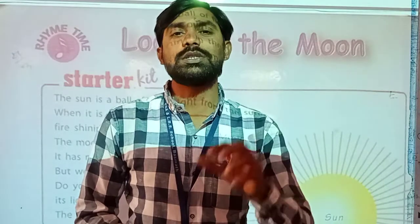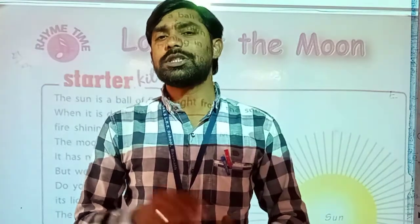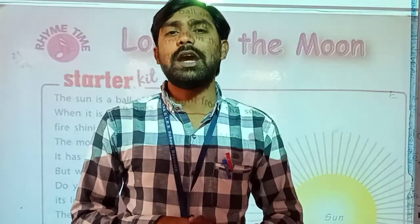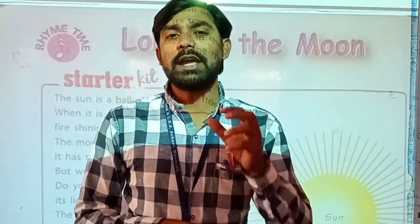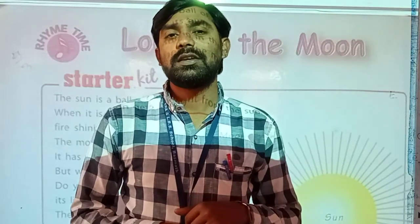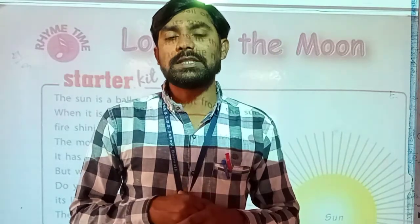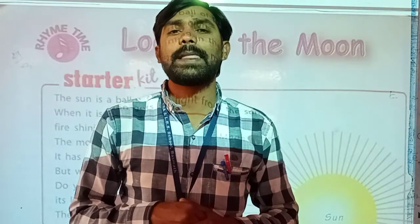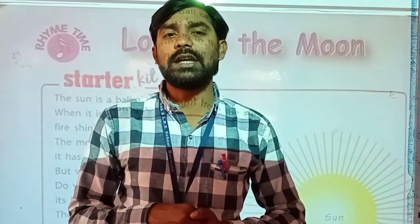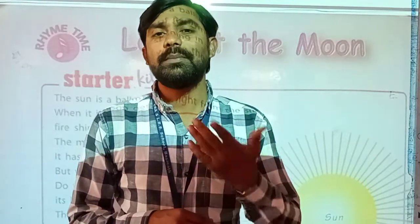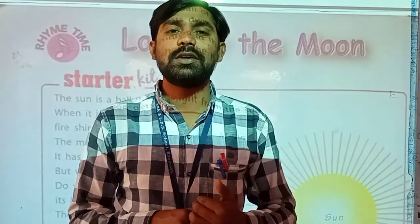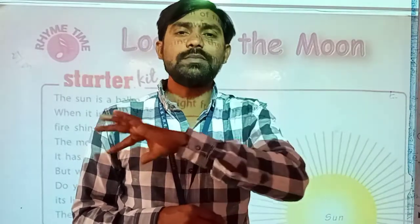The sun is known as a ball of fire and it has its own light. In daytime, we can see the sun in the sky. We can see the moon at night in the sky — it also shines. But the moon does not have its own light. It takes light from the sun only.